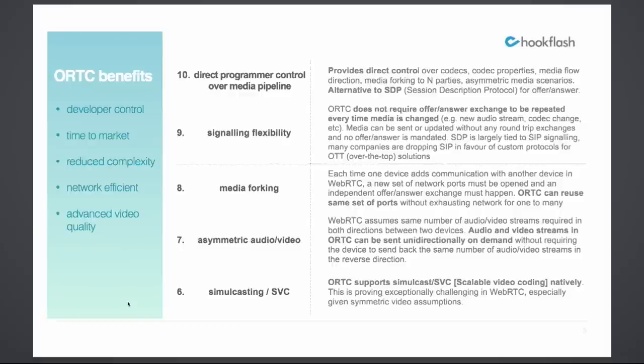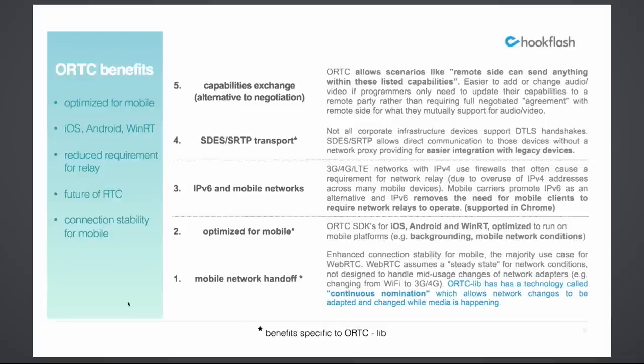Number six is simulcasting and scalable video coding, native to the new ORTC application. Number five is capabilities exchange. This allows the remote side — essentially polling and interrogation — so that I can get a clearer vision and understanding of what the other side of my peer-to-peer connection is doing. You can imagine the valuable applications that we'll see with that kind of capabilities exchange.